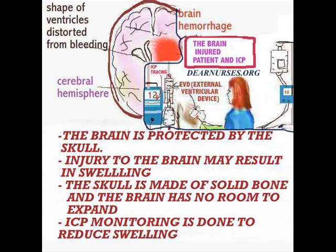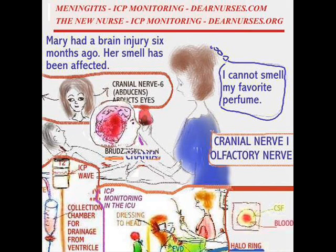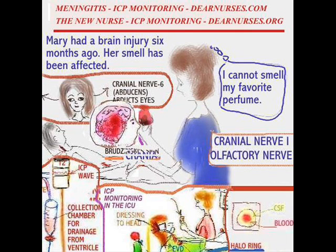We also have resources on meningitis and ICP monitoring at dearnurses.com and dearnurses.org for the new nurse. There are also questions quizzing you about the cranial nerves. There are 12 of them — the first cranial nerve is the olfactory, which is the nerve of smell. Sometimes when patients have surgeries or traumas that nerve is affected and they have difficulty smelling. Some people who have brain surgery might come out not being able to smell.